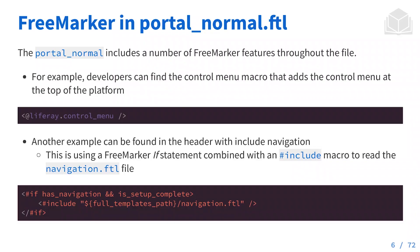We're going to be using FreeMarker for all of our HTML files, including this HTML source file. We have the ability to take advantage of FreeMarker features I talked about in the last chapter. These FreeMarker features include things like macros — we can see some macros already in use, taking advantage of running things like the control menu, for example. We also have our if/else statements and includes already working in our base theme.